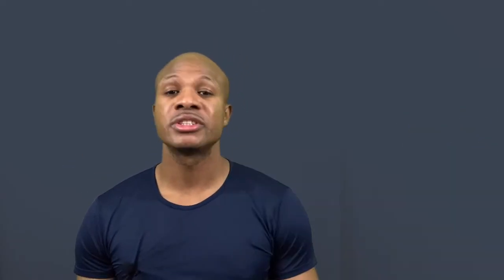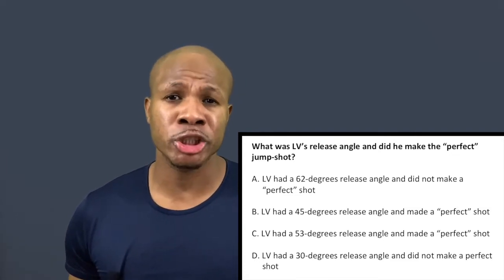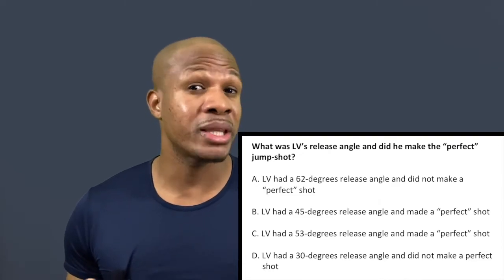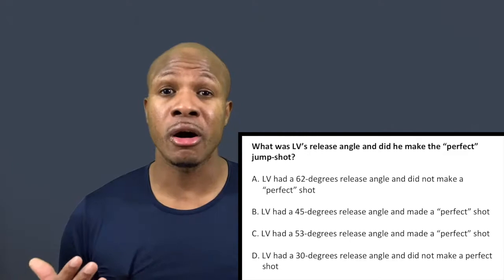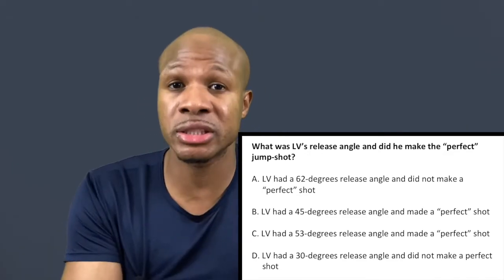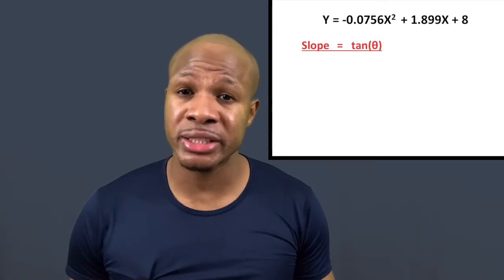Now for part two: what was LV's release angle, and did he make the perfect jump shot? The perfect shot requires the ball to enter the basket at 45 degrees. The angle the ball takes corresponds to the slope of the curve. A slope of zero is flat, an infinite slope is straight up, and 45 degrees sits right in the middle. The slope has a tangential relationship with the angle.